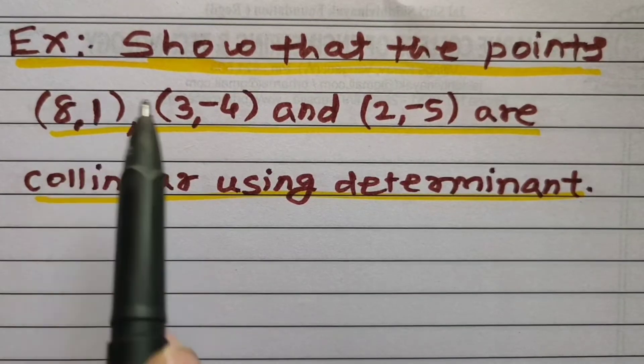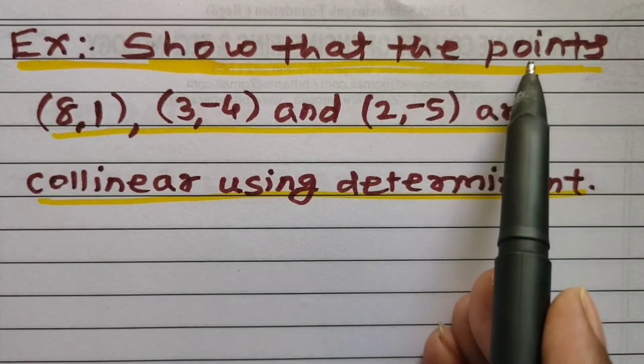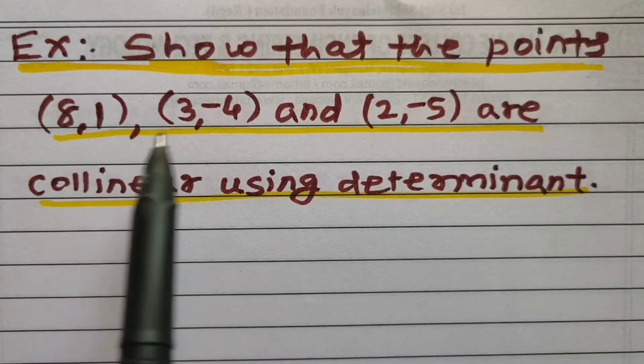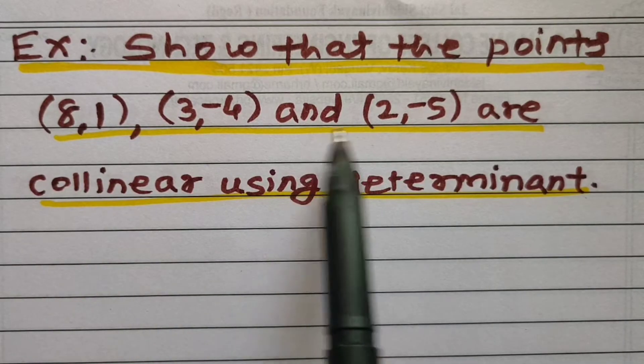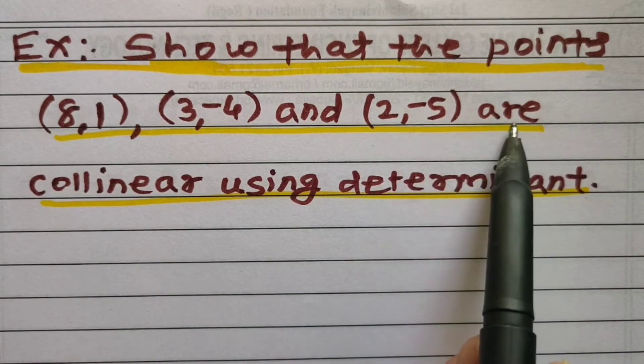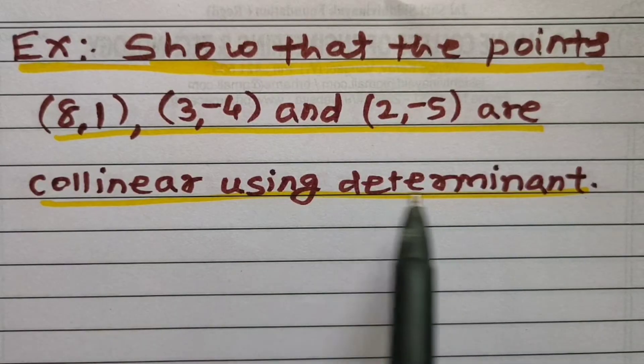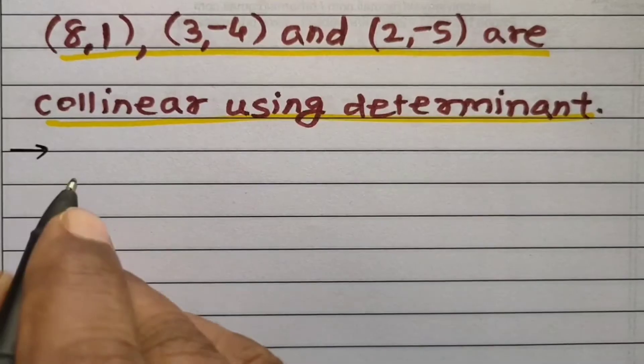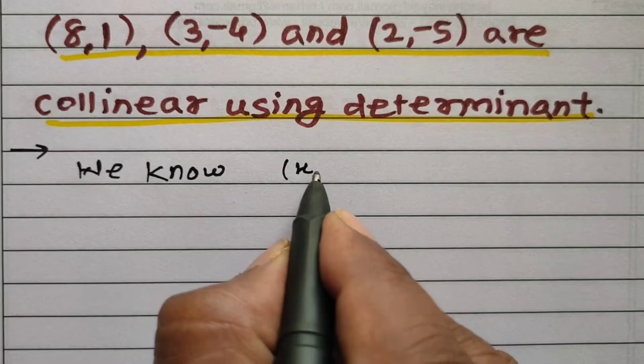Let us solve this example. Show that the points (8,1), (3,-4) and (2,-5) are collinear using determinant. We know 3 points (x1,